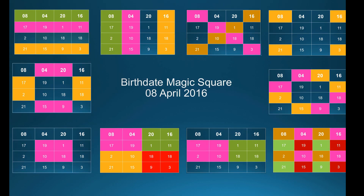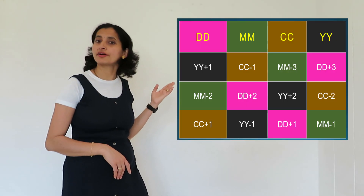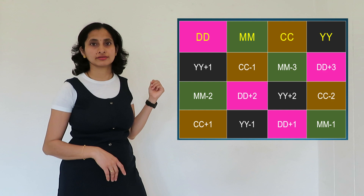So this is the magic square. After substituting all the values, recheck: add all the numbers in the form of row, column, diagonal, corner numbers, identical colors, middle square, corner square, or any identical numbers — you will get the same value. It is 46. This is the birth date magic square, and that is the formula.